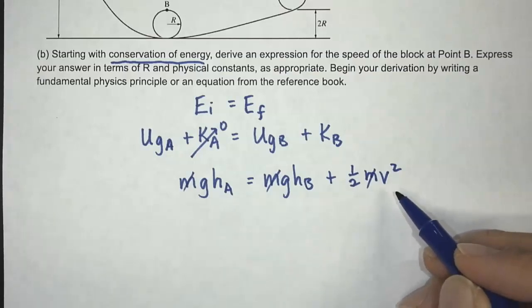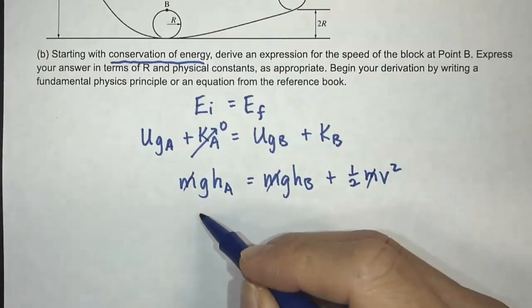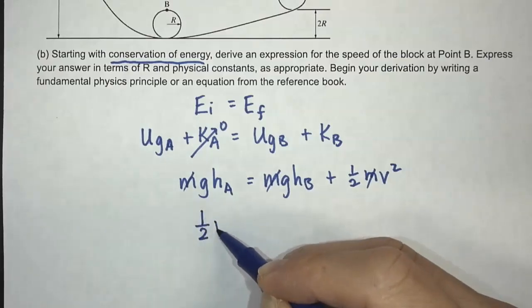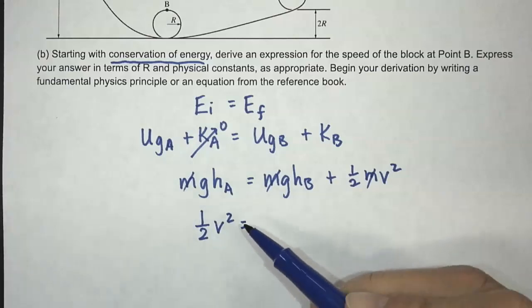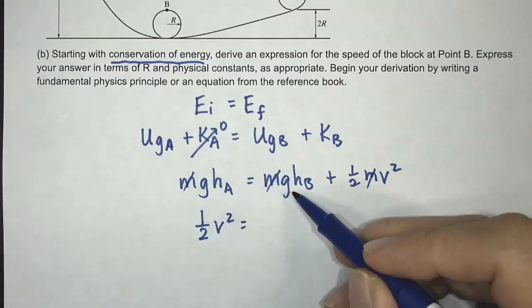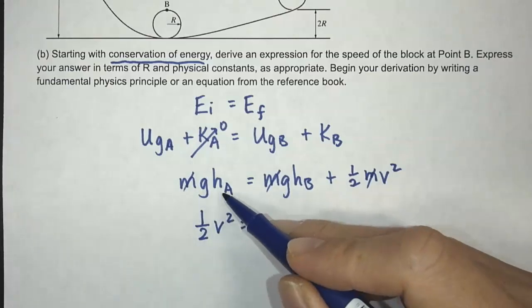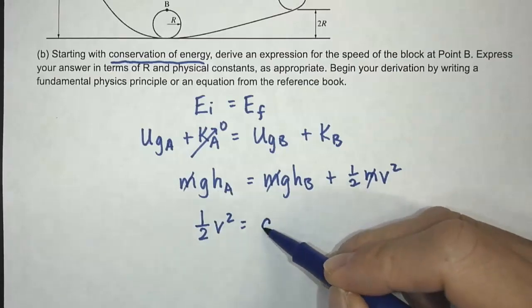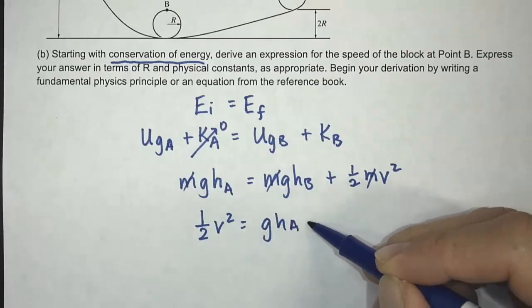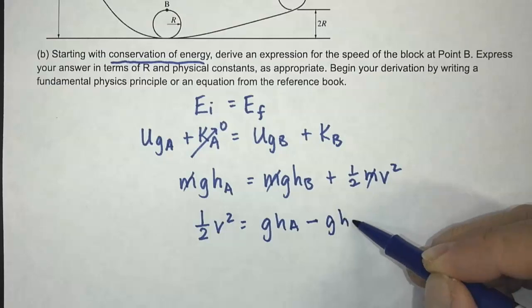So I'm looking for V. So I want to try to get V by itself. So let's try to get 1/2 V squared. And then I'm going to move gHB to the same side, so I get 1/2 V squared equals gHA minus gHB.